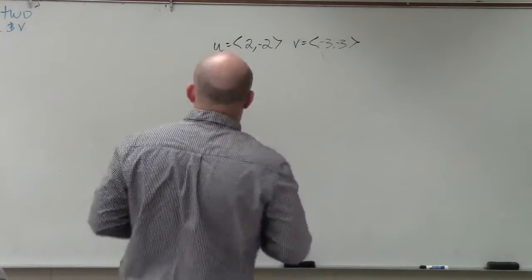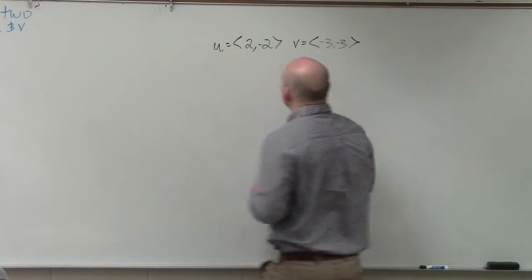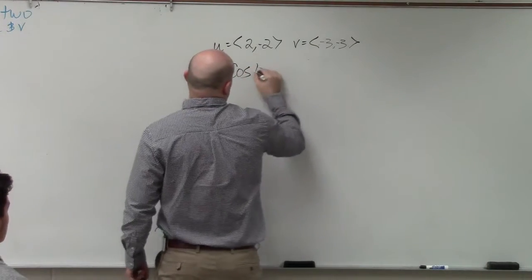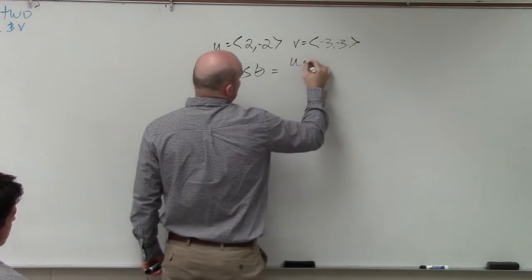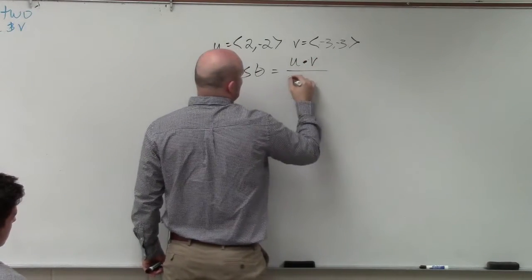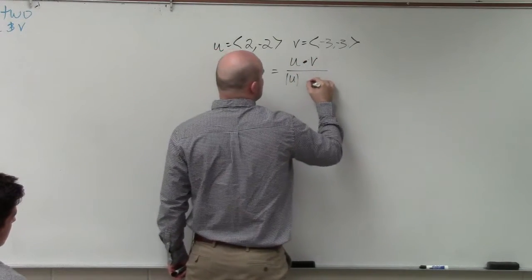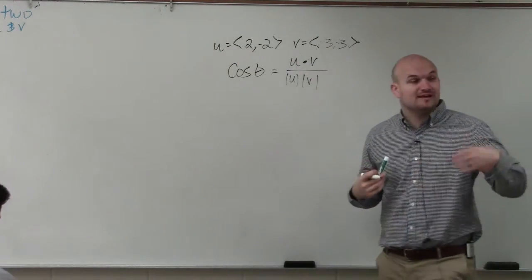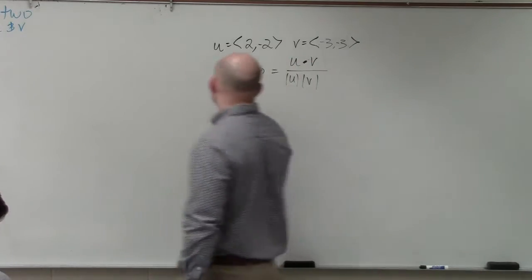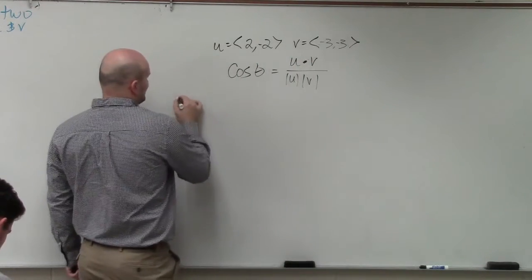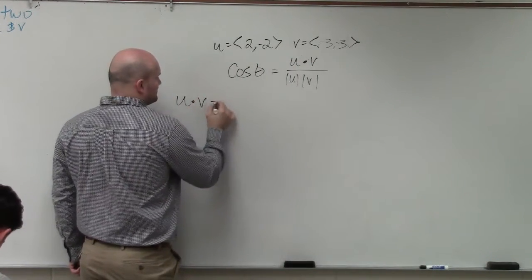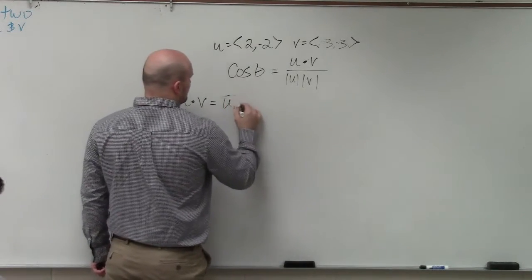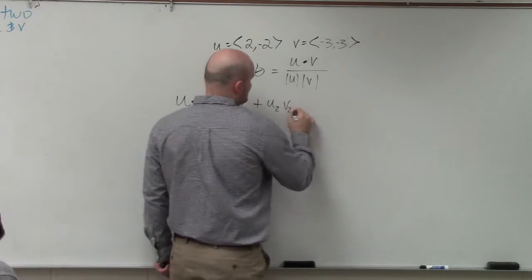In this example, ladies and gentlemen, if we want to find the angle between two vectors, the formula we have is: cosine of theta is equal to u dot v divided by the magnitude of u times the magnitude of v. My recommendation would be to find each and every piece of this information separately. So the first thing is we can find the dot product. The dot product u dot v is simply u1 times v1 plus u2 times v2.